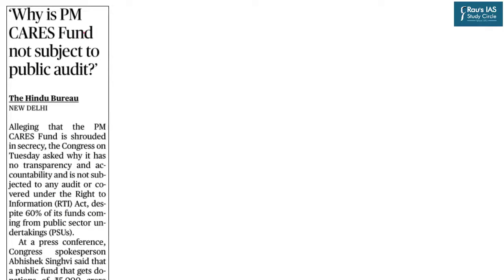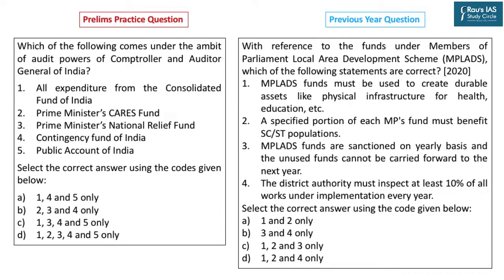You must also have read the news on PM CARES Fund. UPSC asks about important funds dealt by the Government of India — in 2020 they asked about MP LADS funds. The question here is: which of the following comes under the audit powers of the Comptroller and Auditor General of India? All expenditure from the Consolidated Fund of India, Contingency Fund of India, and Public Account of India — yes, all come under CAG. But PM CARES Fund and PM's National Relief Fund do not come under CAG's audit powers; they are audited by private agencies. The Supreme Court ruled that PM CARES Fund is a charitable trust and does not use money from the Consolidated Fund, Contingency Fund, or Public Account. So the answer is option A.